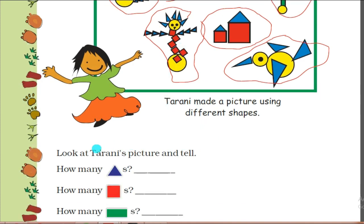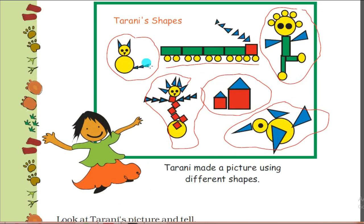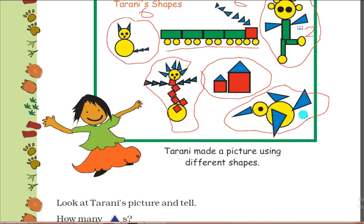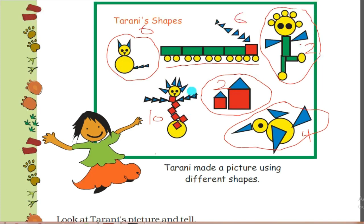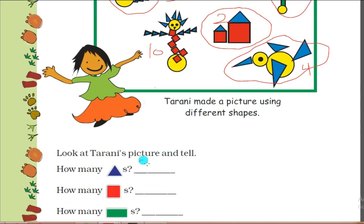Here you have to look at Tarani's picture and count how many triangles are there. In the cat there are six triangles, in the train six triangles, in another picture two triangles, four triangles, two triangles, and ten triangles - so in total thirty triangles Tarani has used.